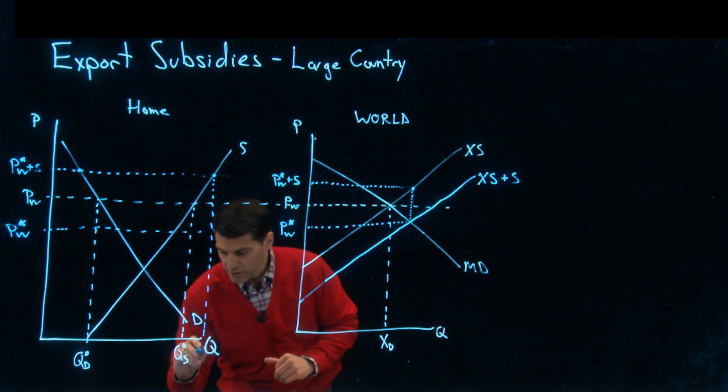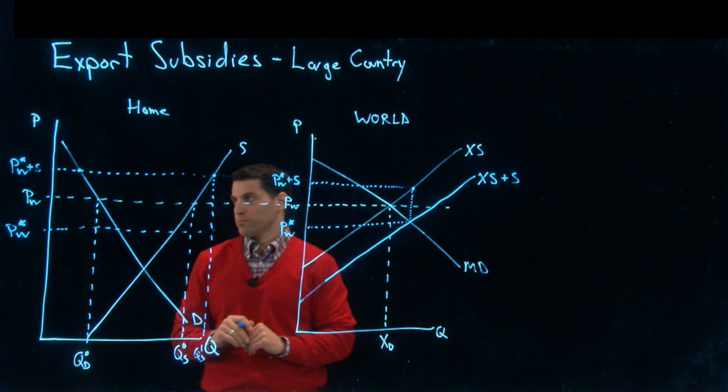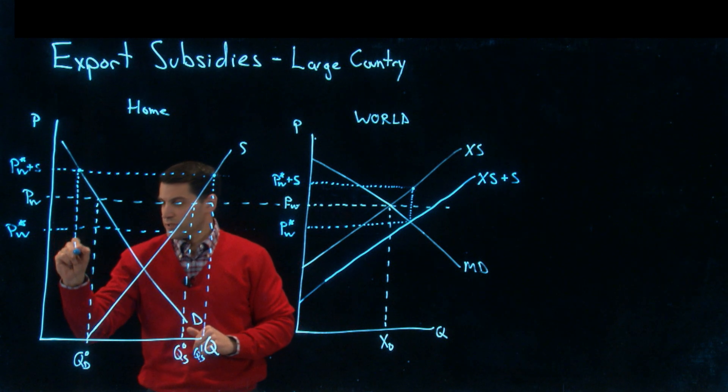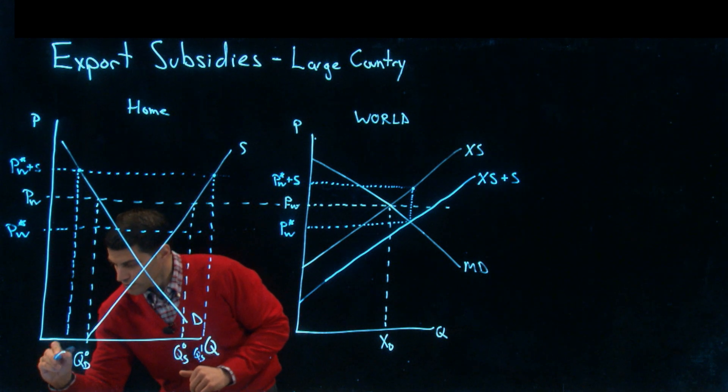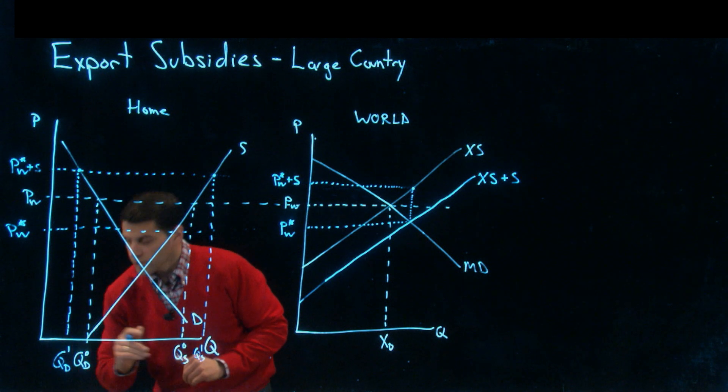What does that mean for our supply and demand quantities? Our quantity supplied goes up. Quantity demanded goes down.